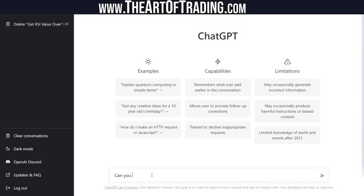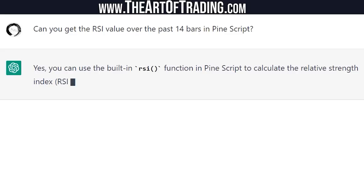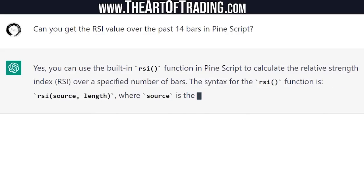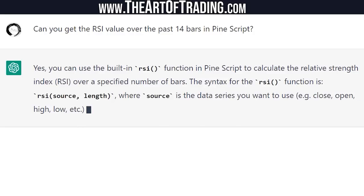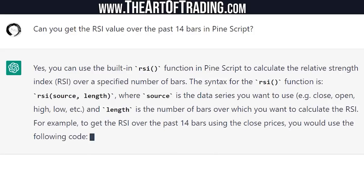I asked: can you get the RSI value over the past 14 bars in Pinescript? It said yes, you can use the built-in RSI function to calculate the relative strength index over a specified number of bars. The syntax is RSI source length, where source is the data series you want to use — open, high, close, etc. That's all correct, but it's old code.